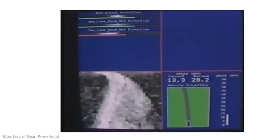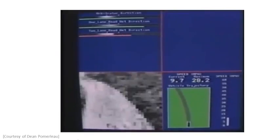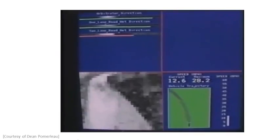The steering direction from the most confident network, in this case the network trained for the one-lane road, is used to control the vehicle.